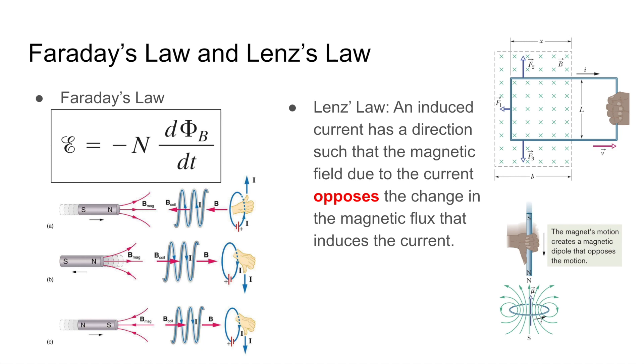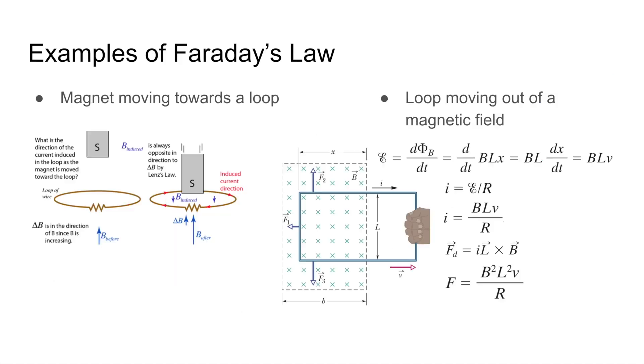The direction of the current can be determined by the right-hand rule. So in this example, the one on the left, when the magnetic south pole moves towards a loop, the magnetic flux is originally pointing upwards, but when the magnet moves closer, the magnetic field that the magnet produces, that the ring feels,